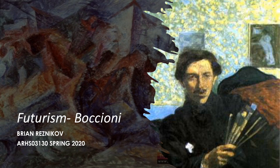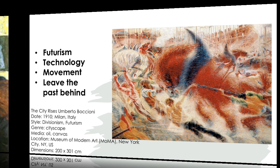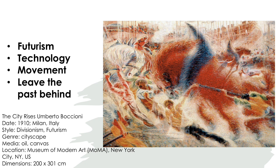Futurism by Umberto Boccioni. Futurism was an art and social movement that occurred in the early 1900s. Futurists often depicted motion and speed through still paintings. They also embraced technology, such as industry, cars, machines, and trains. They also had quite a knack for violence in their work.